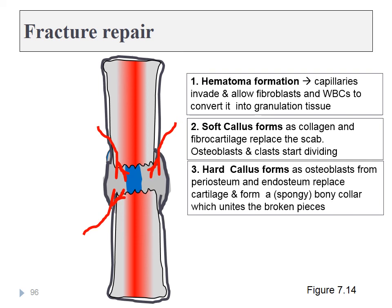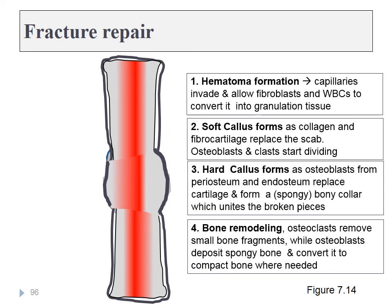The last thing that will happen is the same as in skin: replacing some of what was deposited with the type of tissue actually wanted. I'll make sure there is compact bone on the outer edges, spongy bone in the middle, possibly even a hollow medullary cavity. This last step is the remodeling step, and the extra blood vessels that are no longer needed are removed.